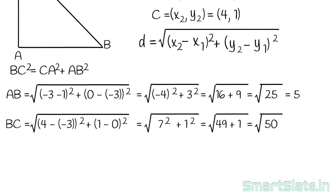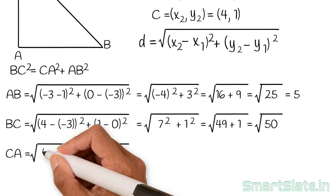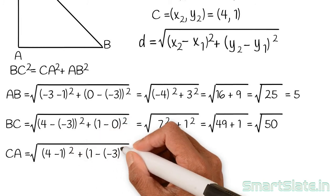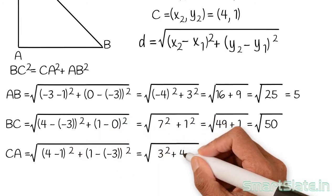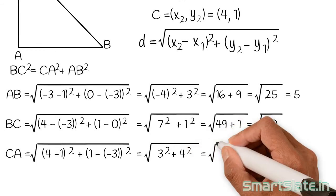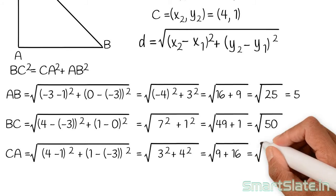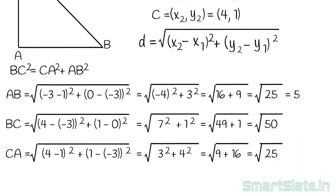Now calculate CA. It is square root of (4 minus 1) squared plus (1 minus -3) squared. That is square root of 3 squared plus 4 squared. 3 squared plus 4 squared is 9 plus 16, which is square root of 25. So the distance CA is 5 units.